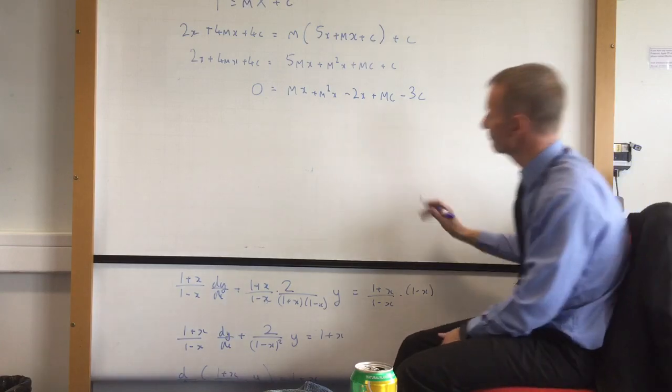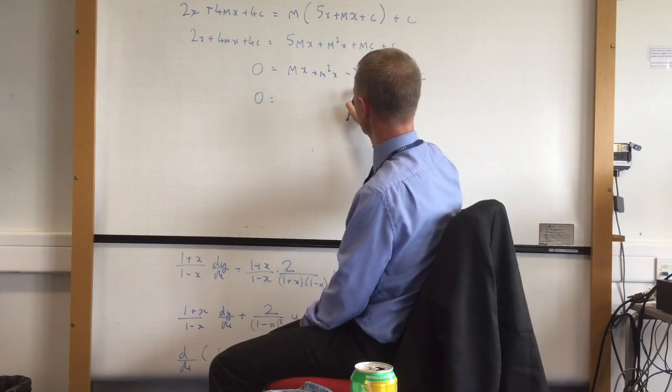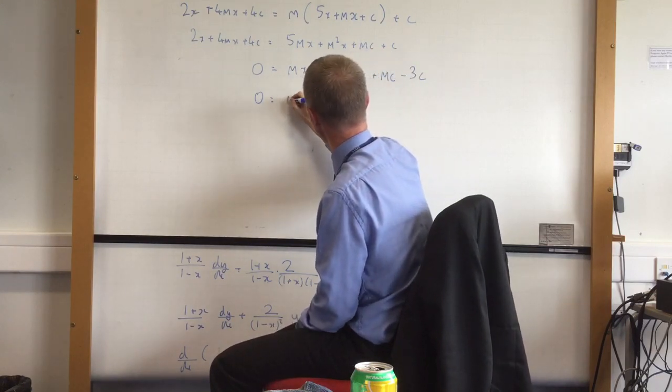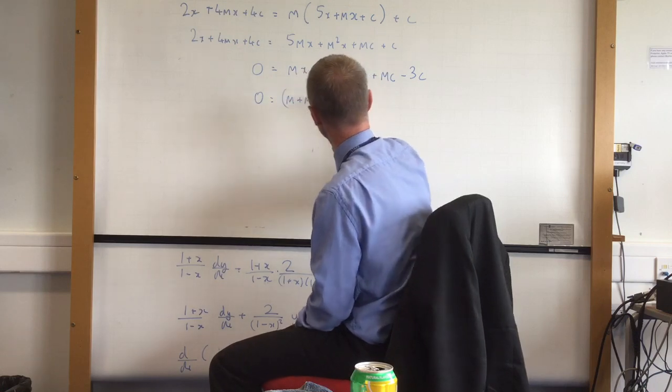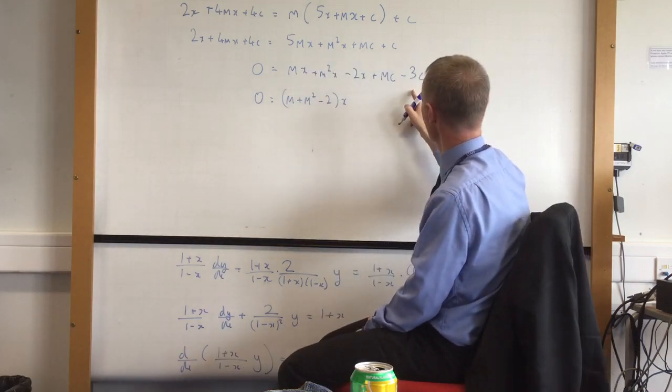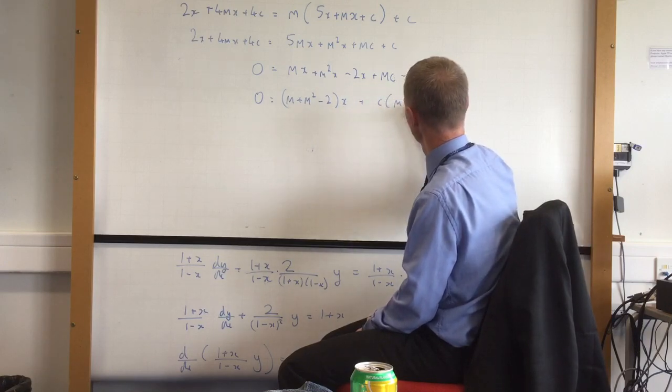Right, x, x and x, which means that will factorize to m plus m squared minus 2 times the x. And that bit there will factorize to c times m minus 3.